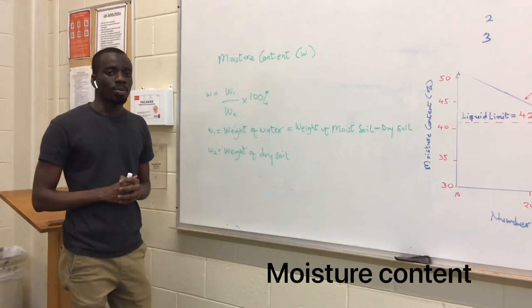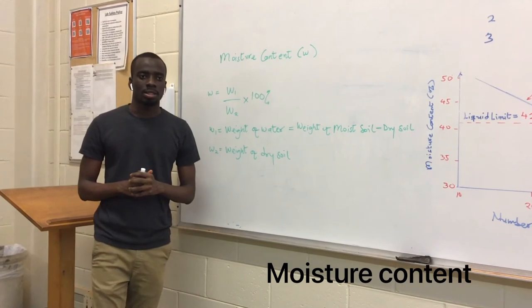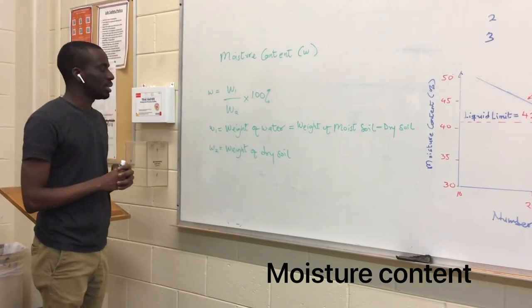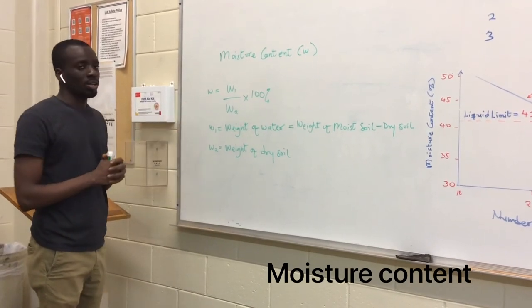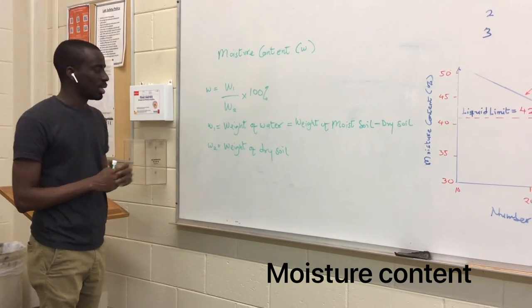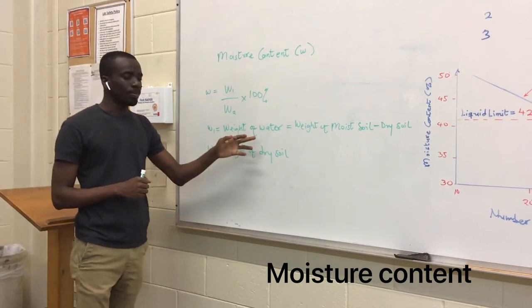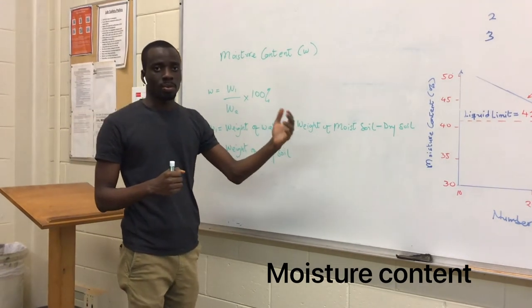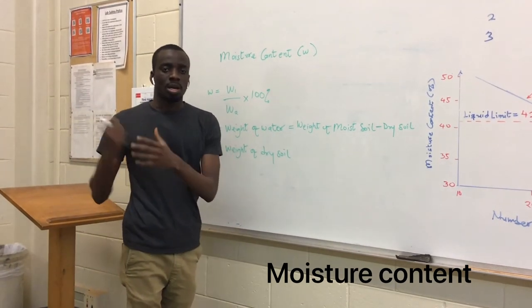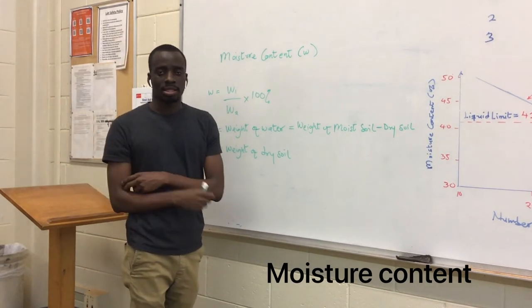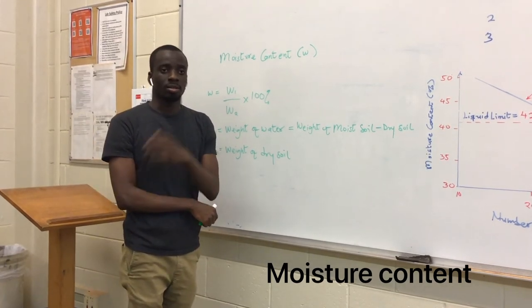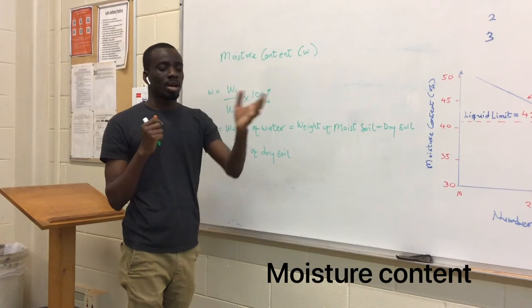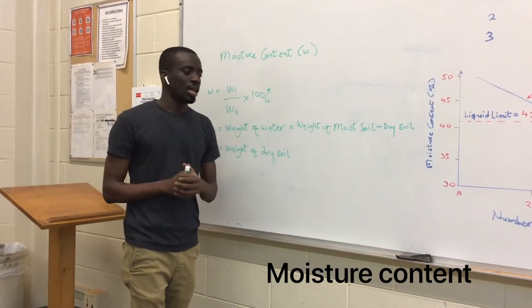Just to give a quick recap of how to calculate the moisture content. Our moisture content is W1 over W2 times 100% and our W1 is weight of water. The weight of water is the weight of the moist soil minus the weight of the dry soil. We get it from subtracting the weight after drying in the oven from the weight when we measure it on the scale first after the test.